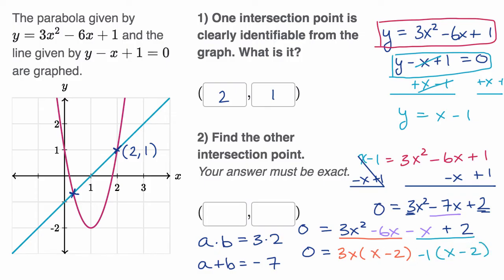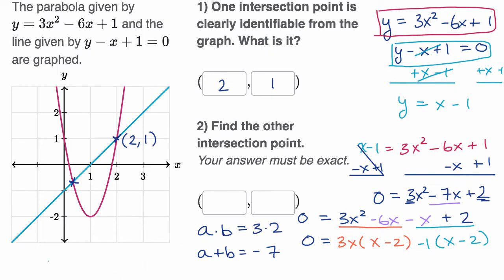I'll scroll down a little bit so I have some space. So I have zero is equal to, if I factor out an x minus two, I'm going to get x minus two times three x minus one.